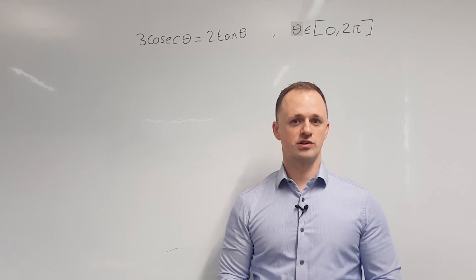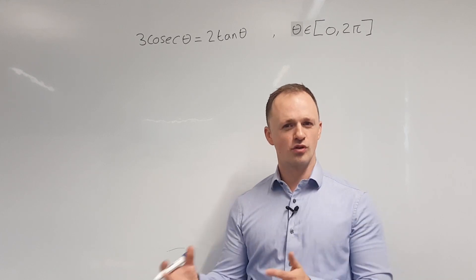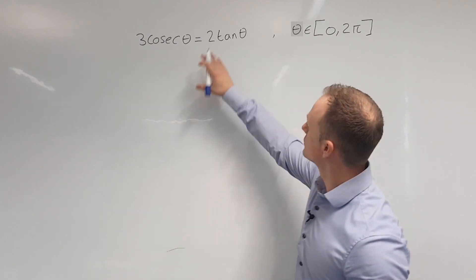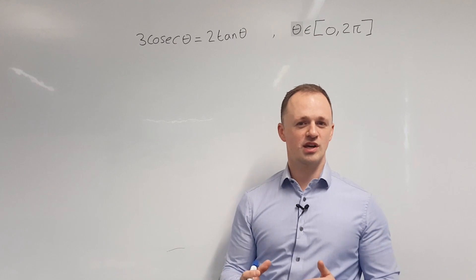In this question, we're going to solve the equation 3 cosec theta equals 2 tan theta in the region 0 to 2 pi. So the first thing we're going to do is take cosec theta and tan theta and write them in terms of sine and cos.